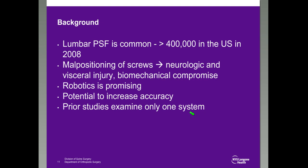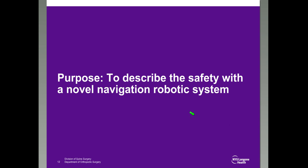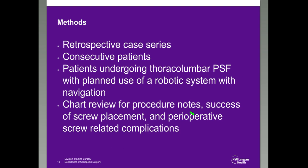Lumbar fusion is a common procedure — about 400,000 procedures done in the U.S. in 2008, and the number is increasing every year. Malpositioning of screws can have significant and sometimes catastrophic problems with neurologic and visceral injury. A screw that's not biomechanically sound can lead to a higher risk of pseudoarthrosis. Robotics became promising with the potential to increase accuracy and diminish radiation exposure. There were prior studies, but only one system came out prior to ours, and it did not have navigation. This is the first robot released with both navigation and robotics combined.